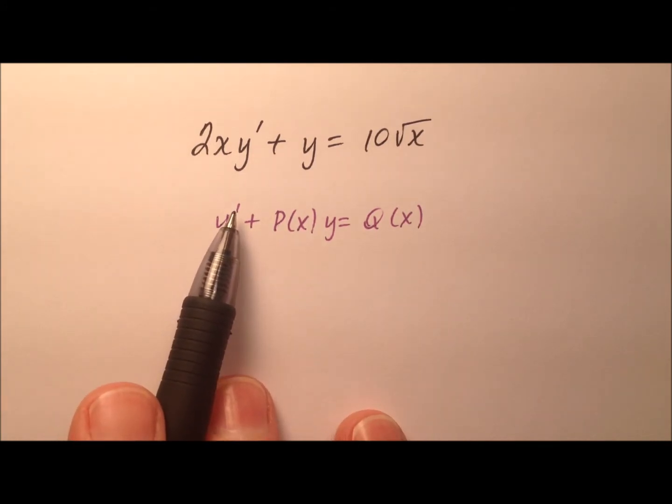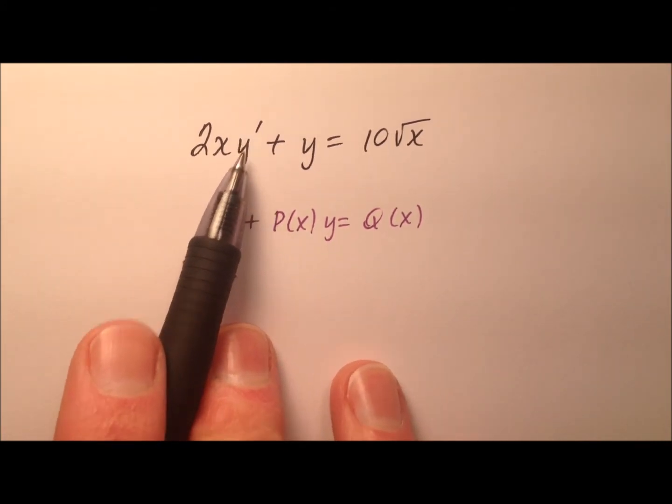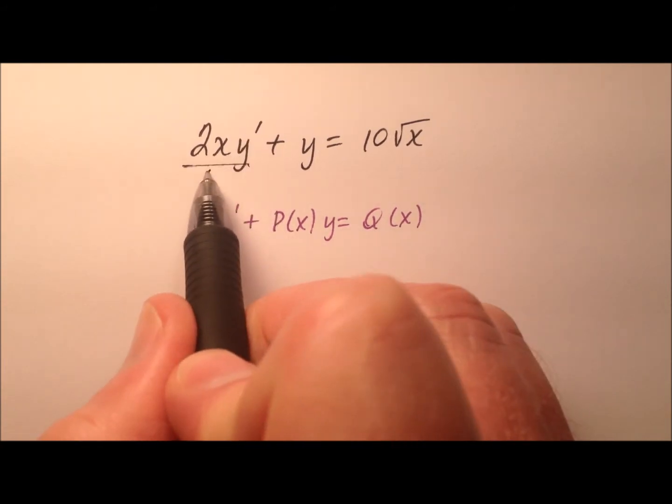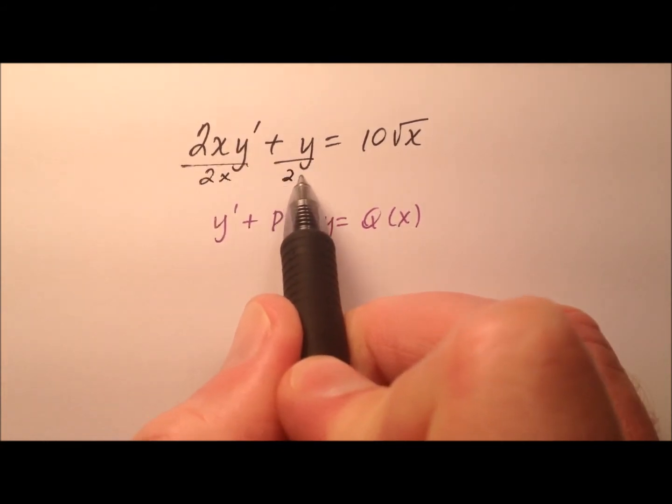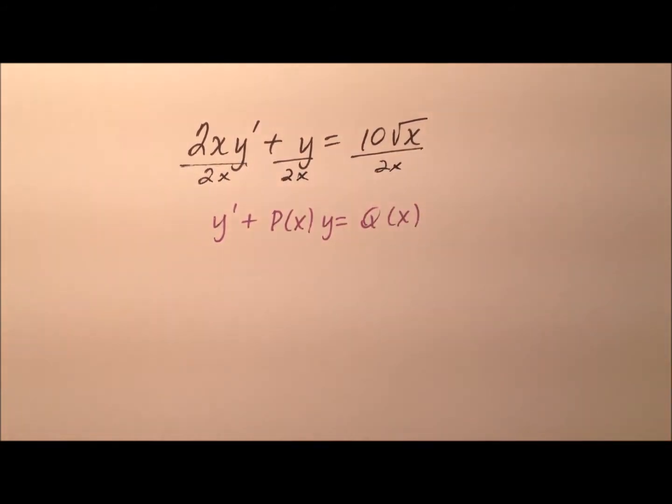So it looks like my y prime needs to be all by itself, but up here it's not. So I'm going to go ahead and start by dividing every single term by 2x to get that y prime by itself.